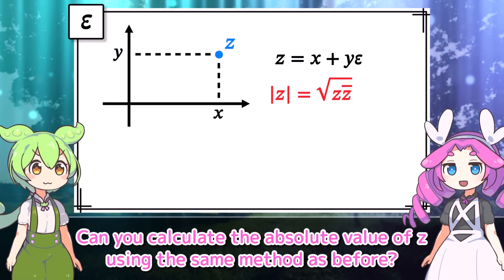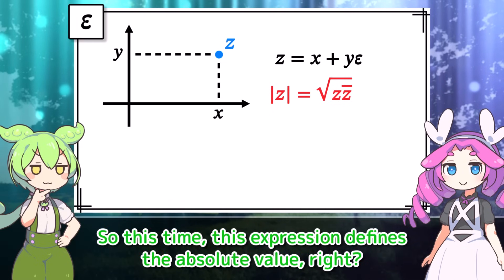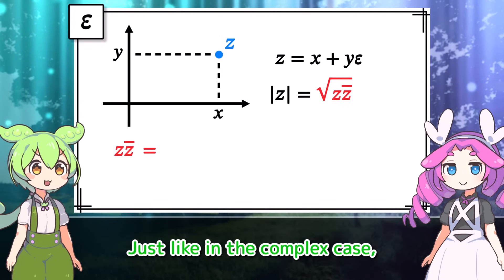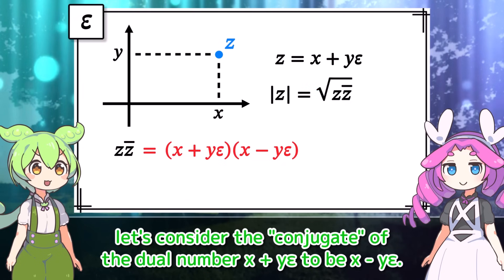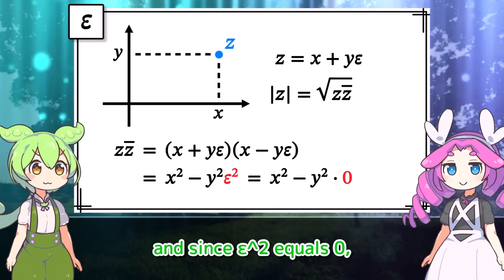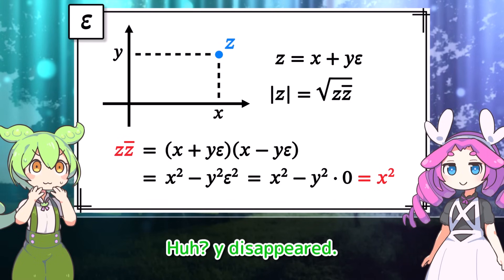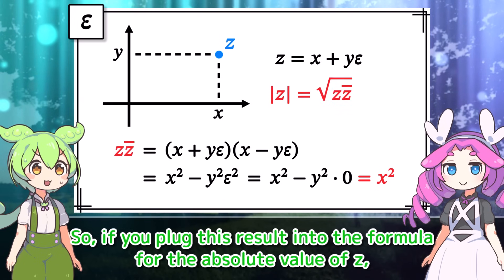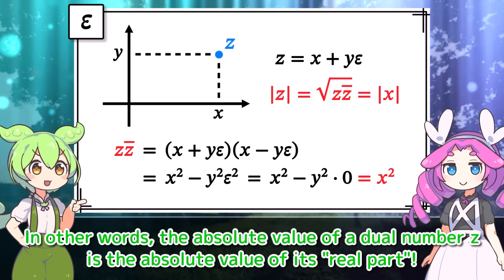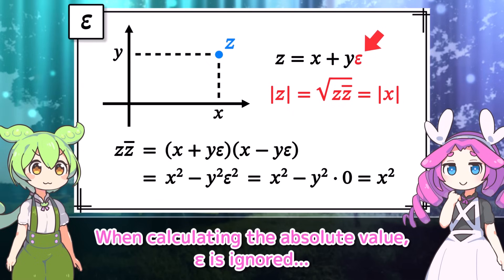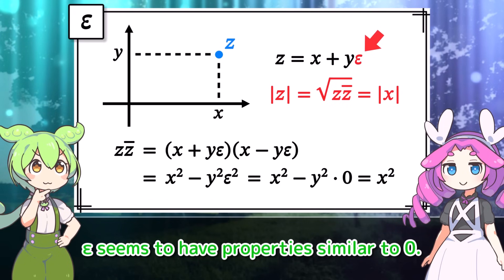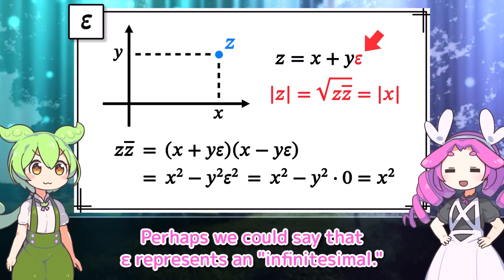That looks good. Can you calculate the absolute value of z using the same method as before? Let's go ahead and calculate what's inside the square root. Just like in the complex case, let's consider the conjugate of the dual number x plus y epsilon to be x minus y epsilon. If you expand this expression, and since epsilon squared equals 0, the answer is just x squared. So the absolute value of z is the absolute value of x — that is, the absolute value of a dual number is the absolute value of its real part. When calculating the absolute value, epsilon is ignored. Perhaps we could say that epsilon represents an infinitesimal.